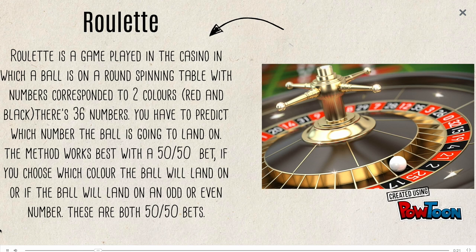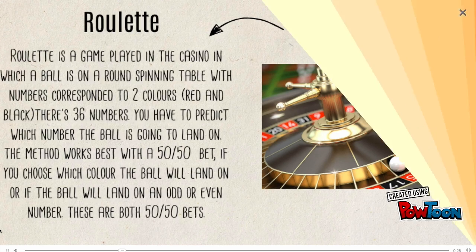The method works best for the 50-50 bet — if you choose which color the ball will land on, or if the ball will land on an odd or even number. These are both 50-50 bets.